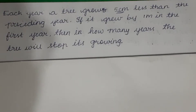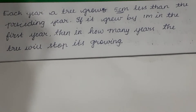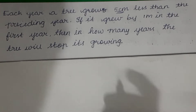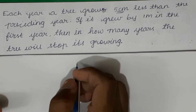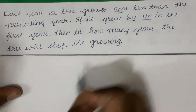Hello guys, welcome back to the channel. Today in this video we are going to deal with this problem from chapter Arithmetic Progression. Let's start the problem: each year a tree grows 5 cm less than the preceding year. If the growth of the tree is 1 meter in the first year, then in how many years will the tree stop its growth?